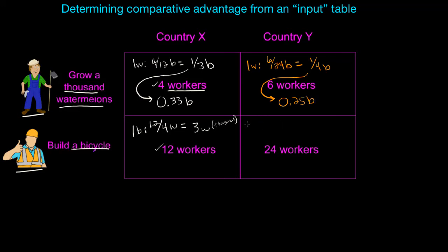How about bicycles? What's the opportunity cost of bicycles in Country Y? How many watermelons could those twenty-four workers have produced? Well only six workers are needed to produce a thousand watermelons. So the opportunity cost of each bicycle is the four thousand watermelons that could have been produced using the twenty-four workers needed to produce a single bicycle.